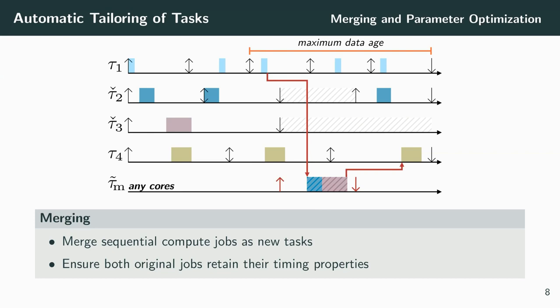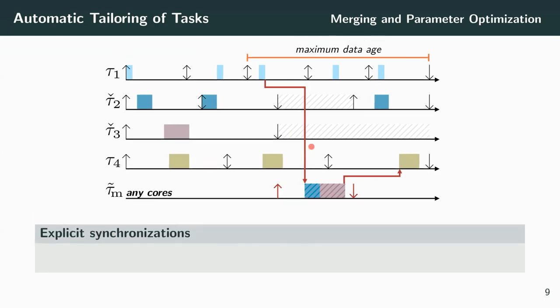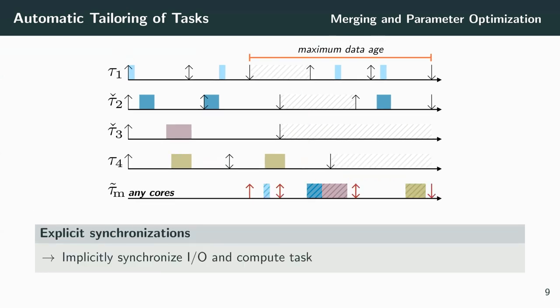Additionally, we left out the I/O tasks, so we still have the explicit coordinations here. This can be adjusted by adapting the release times and deadlines of each of these three tasks such that they are implicitly coordinated. However, not much has changed by now as the data age is still the same and schedulability has decreased at best.